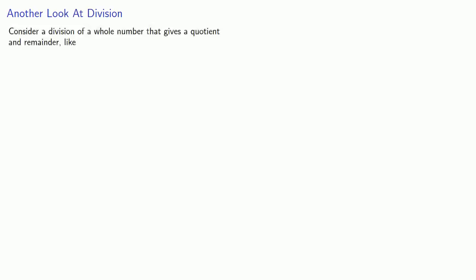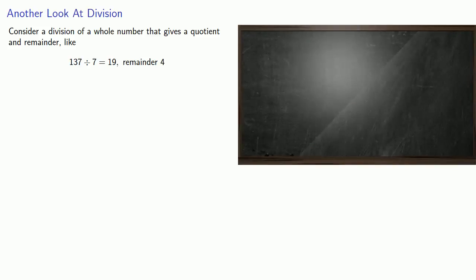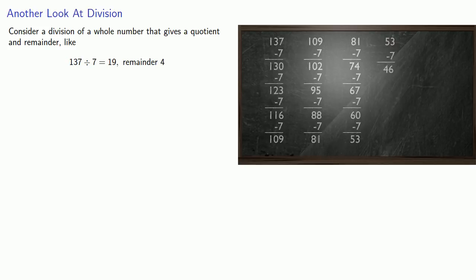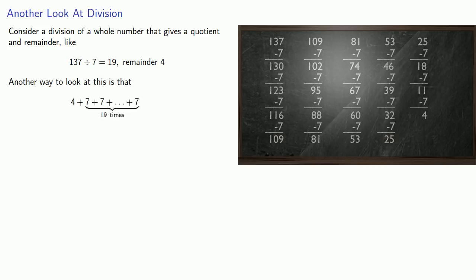Consider a division of a whole number that gives a quotient and remainder, like 137 divided by 7 equals 19 with remainder 4. One way we can look at this division is we started with 137 and we subtracted 7 19 times, at the end of which we had 4. Another way to look at this runs backwards. If we start at 4 and add 7 19 times, we'll get 137.